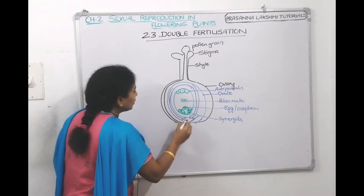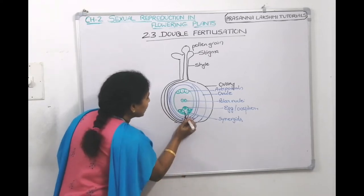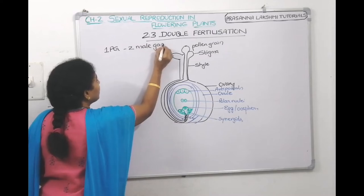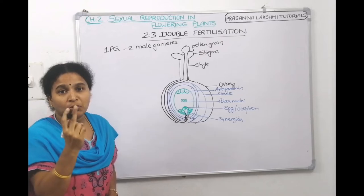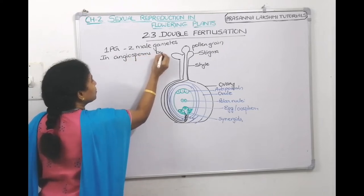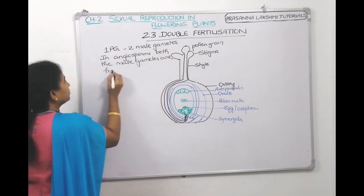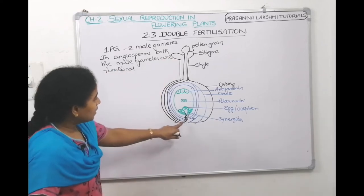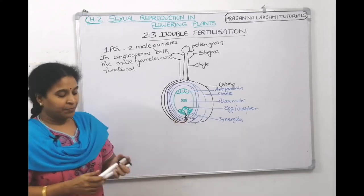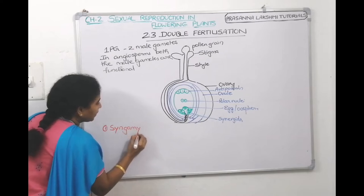The pollen tube sends the male gametes into the embryo sac. How many male gametes are there inside the pollen tube? Two male gametes. One pollen grain contains two male gametes, and in angiosperms both the male gametes are functional — they both have roles to play. One male gamete fuses with the female gamete (egg), and this process is called syngamy.